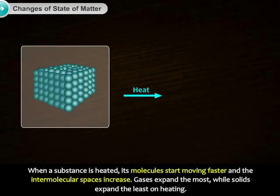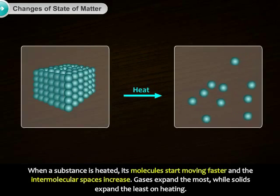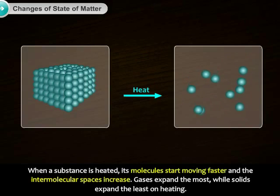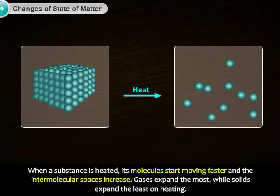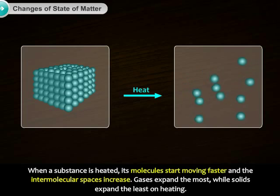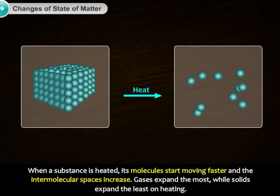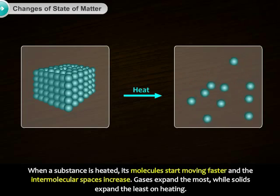When a substance is heated, its molecules start moving faster and the intermolecular spaces increase. Gases expand the most while solids expand the least on heating.